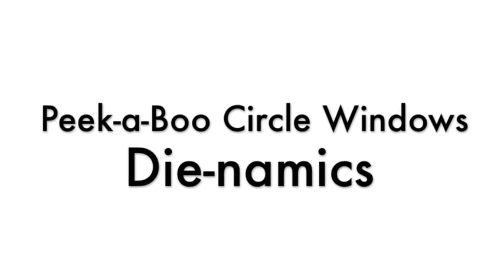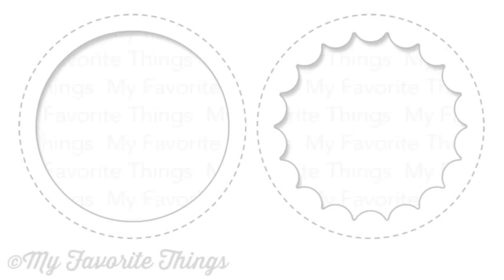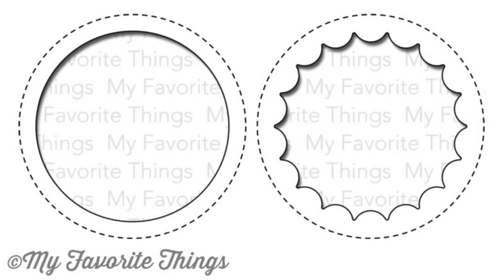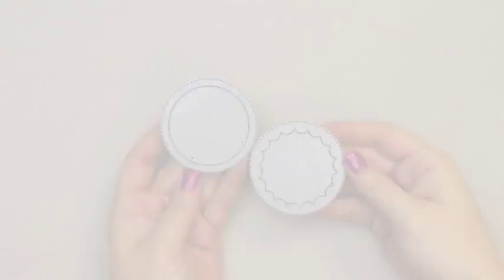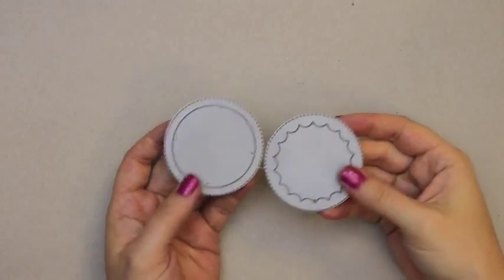Introducing the Peekaboo Circle Windows Die-namics from My Favorite Things. The Peekaboo Circle Windows Die-namics is a two-piece die set that cuts a window out of card bases or layers.